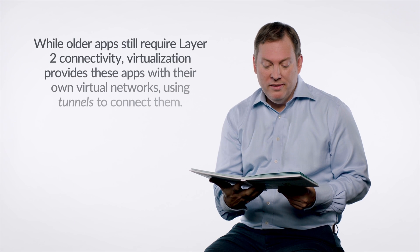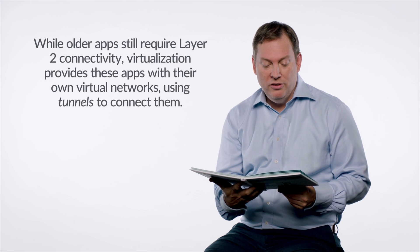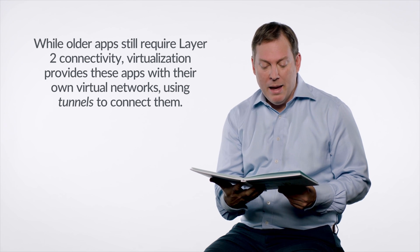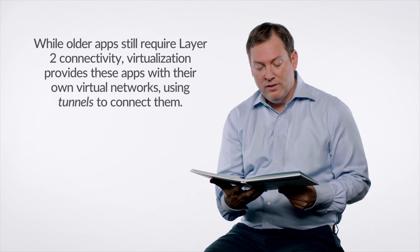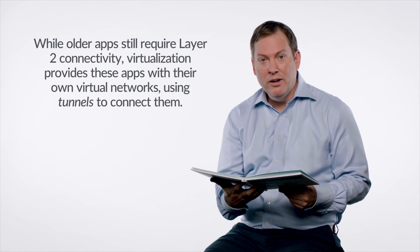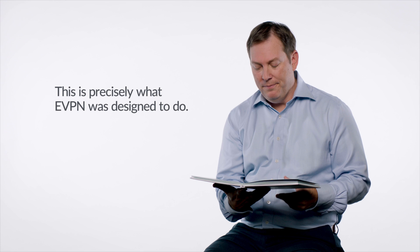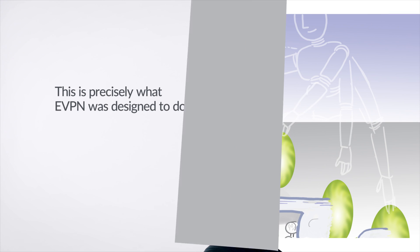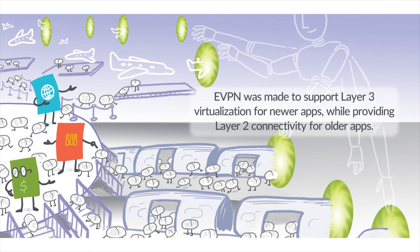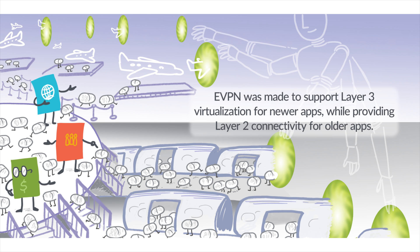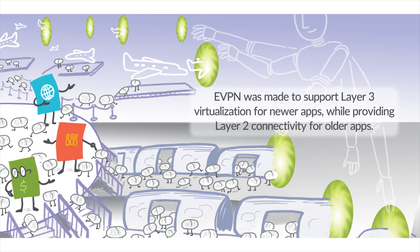While older apps still require Layer 2 connectivity, virtualization provides these apps with their own virtual networks using tunnels to connect them. This is precisely what EVPN was designed to do — EVPN was made to support Layer 3 virtualization for newer apps while providing Layer 2 connectivity for older apps.